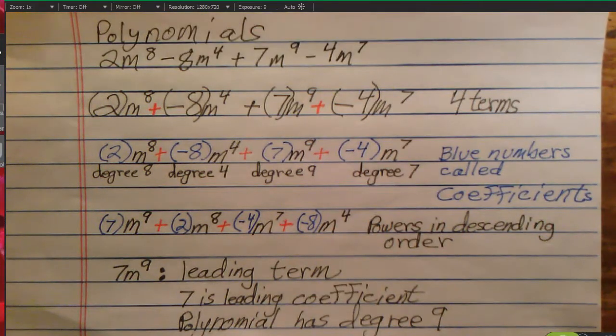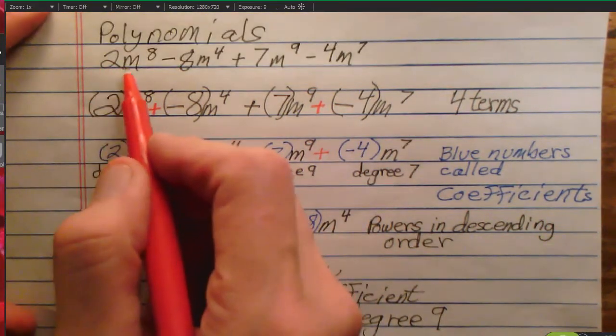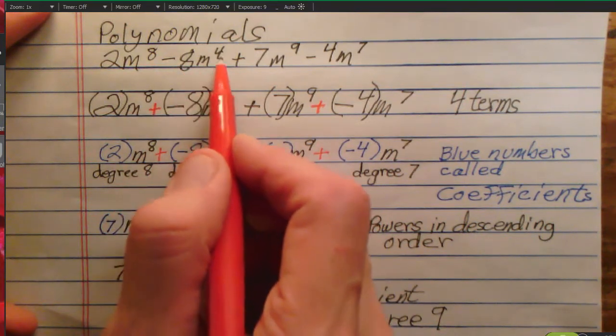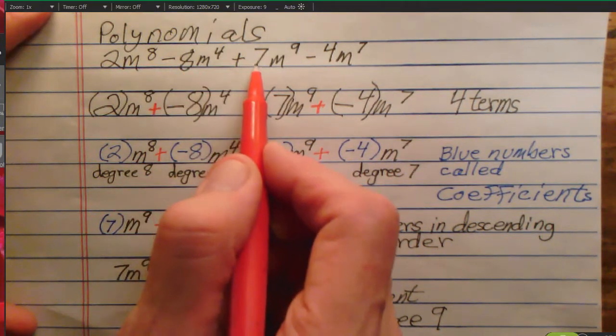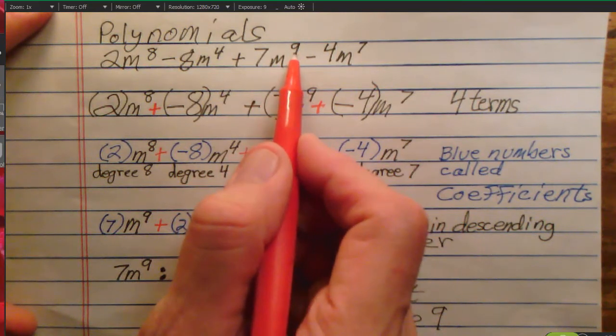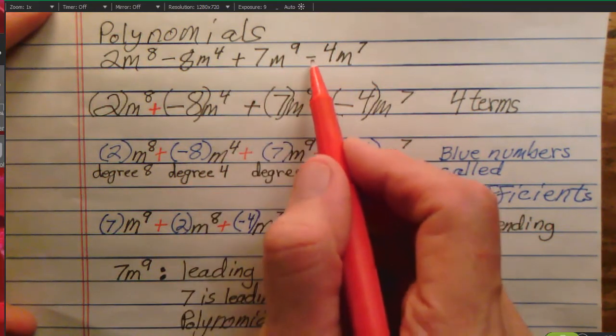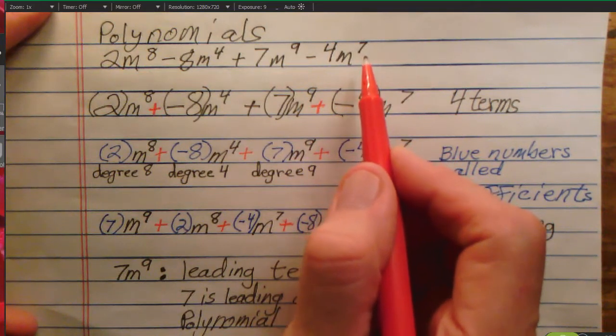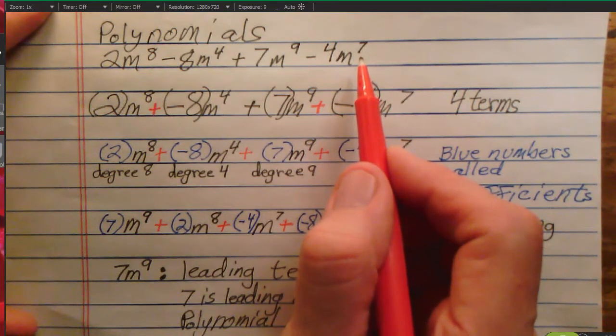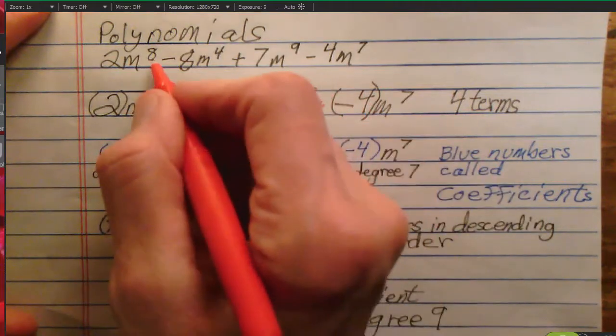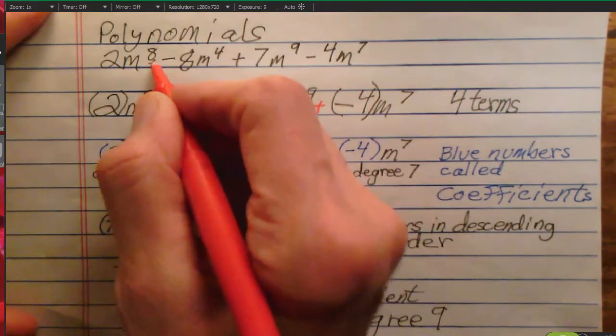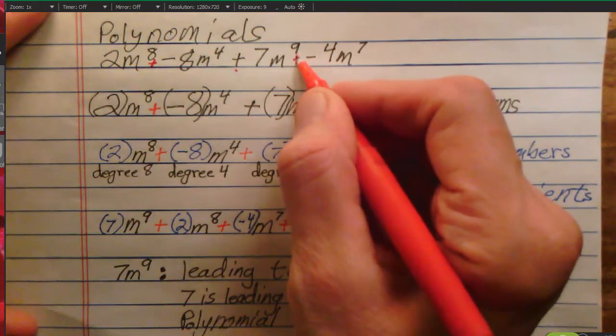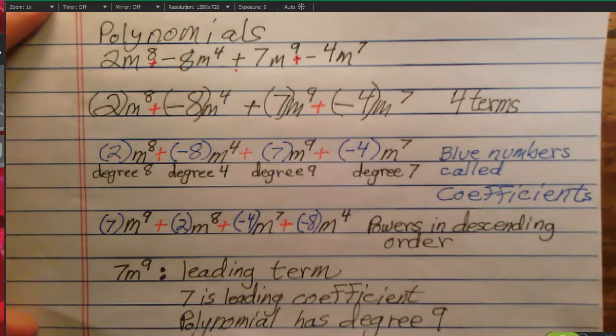These are terms. 2m to the eighth is a term, negative 8m to the fourth is a term, 7m to the ninth is a term, and negative 4m to the seventh is a term. But where are all the plus signs? They're invisible. They're right here, and right here, and right here.